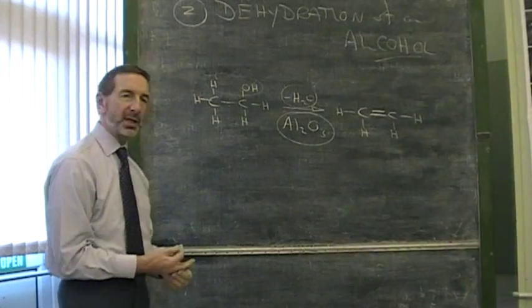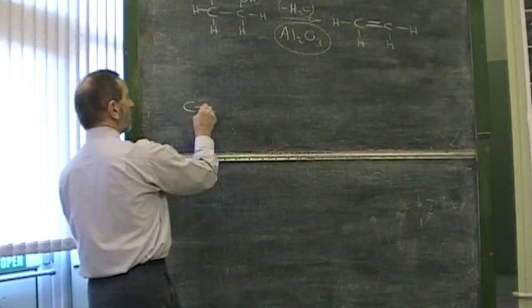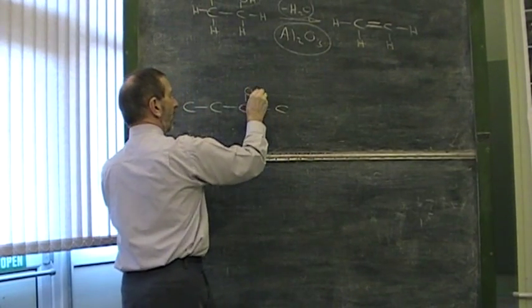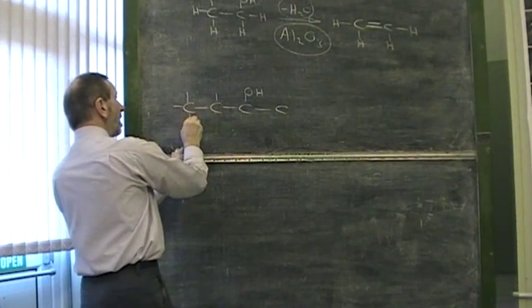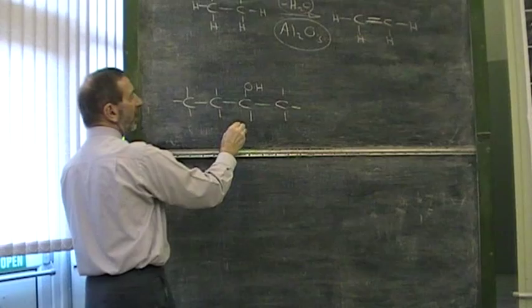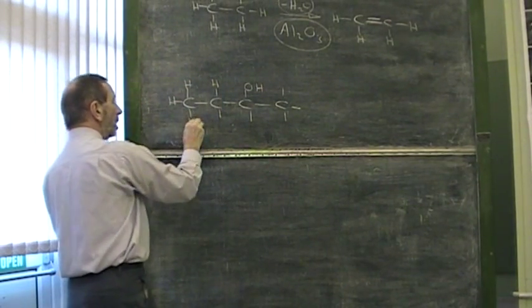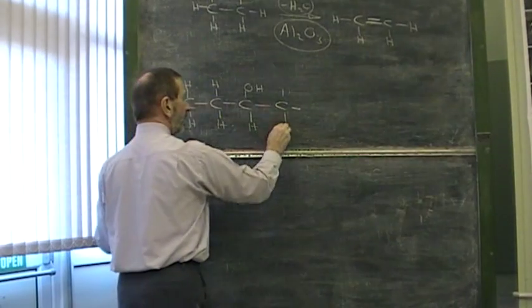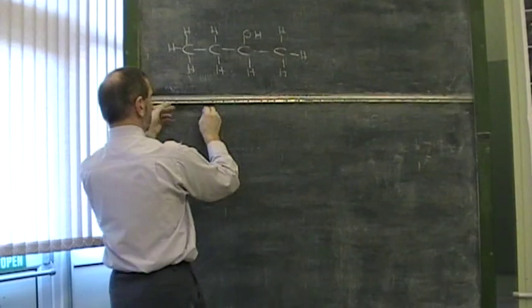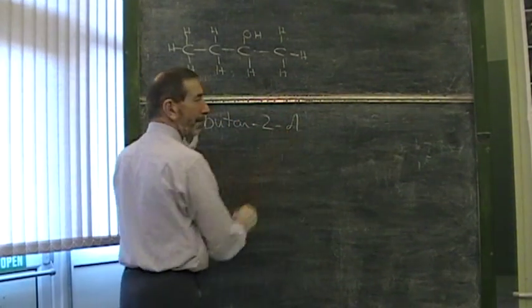There's one little problem with this example. It's slightly too simple. There's a complication that could crop up. Let's take a more complicated alcohol, such as this one here. Now, what is this? Four carbon atoms, butanol, butan-2-ol. Let's have a look at this. It's butan-2-ol, because you have to indicate just whereabouts this OH group is. It's on the second carbon atom, butan-2-ol.